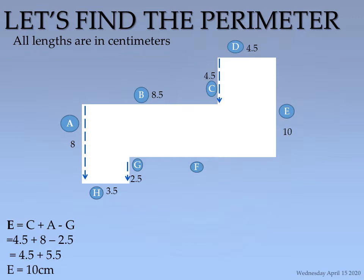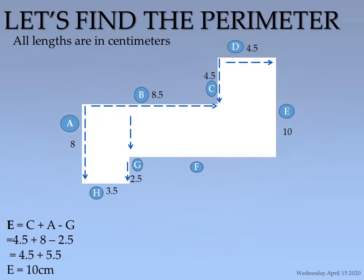Now let's find line F, which is a missing length. The corresponding opposite length is line D, which fits in perfectly, giving us 4.5 centimeters. But we don't have the complete length yet — the rest comes from line B, another corresponding opposite length. However, line B also has an excess that we need to remove.